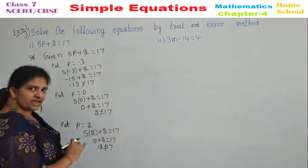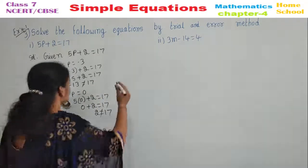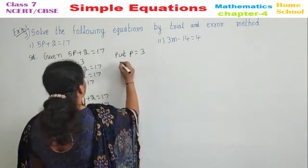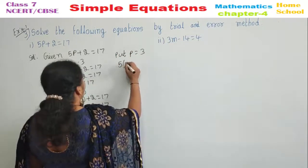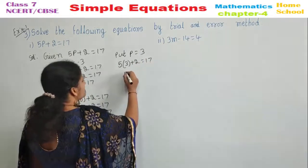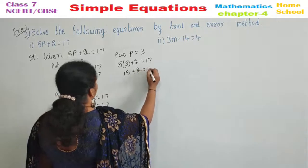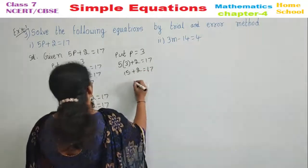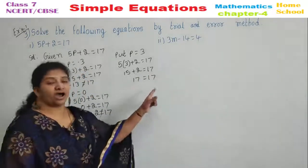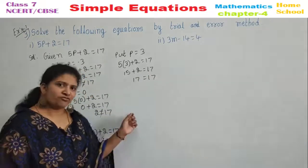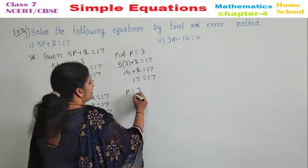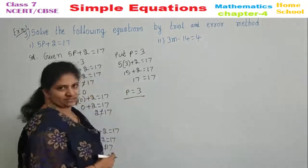Take next number such that we may get the answer. Put P is equal to 3. 5 into 3 plus 2 equal to 17. 15 plus 2 equal to 17. 17 equal to 17. Yes, these two are equal. Therefore, by trial and error method, we get P is equal to 3 is your answer.